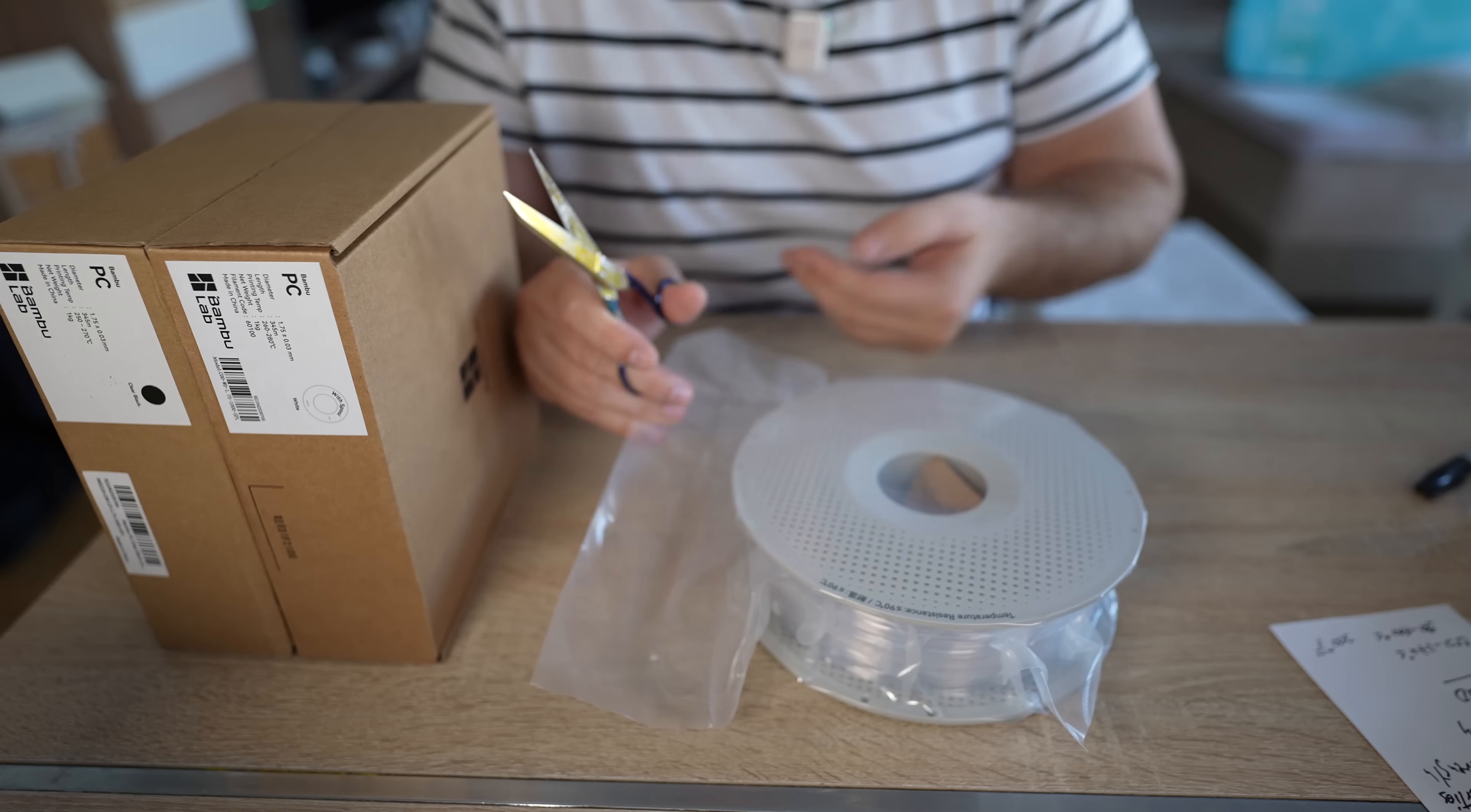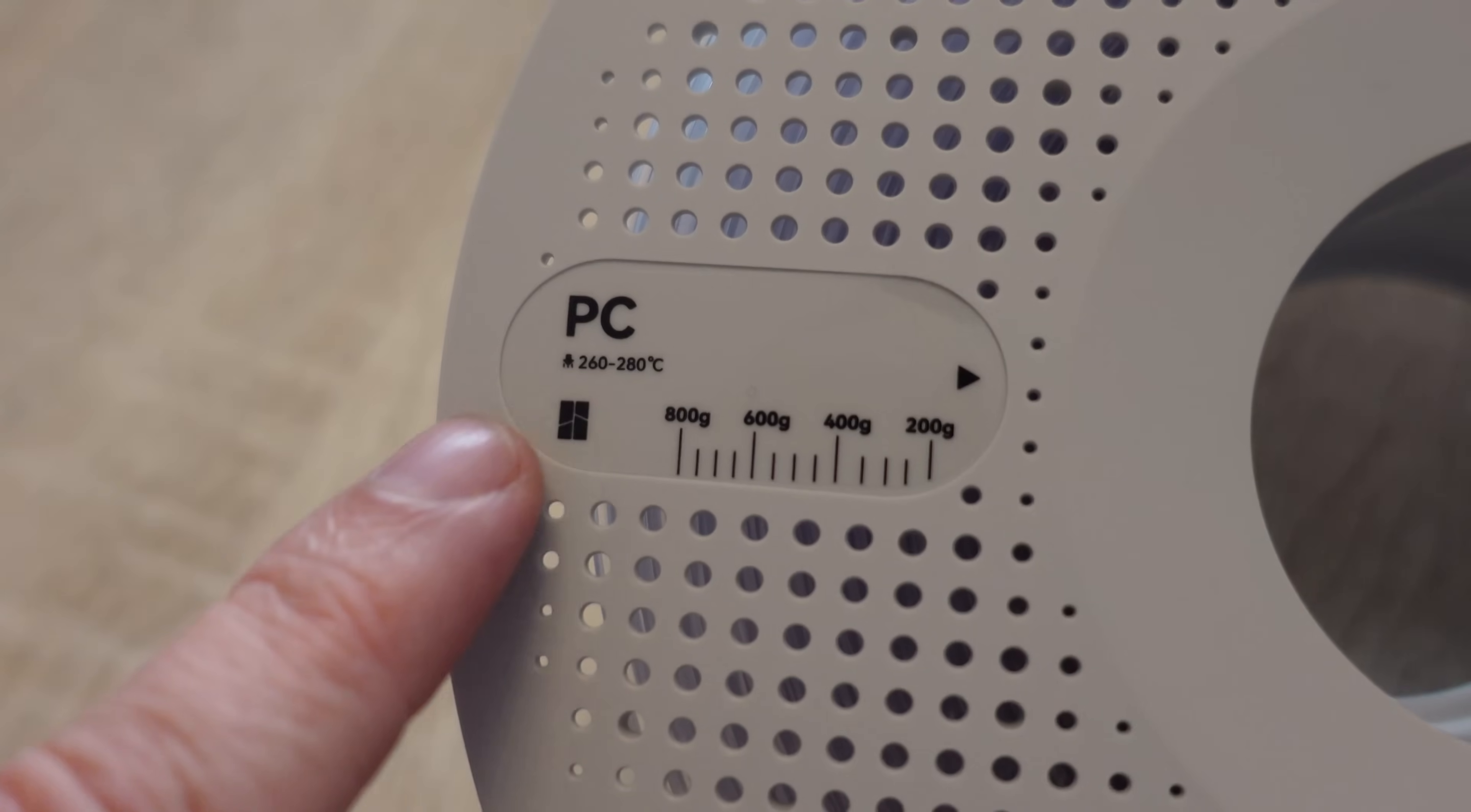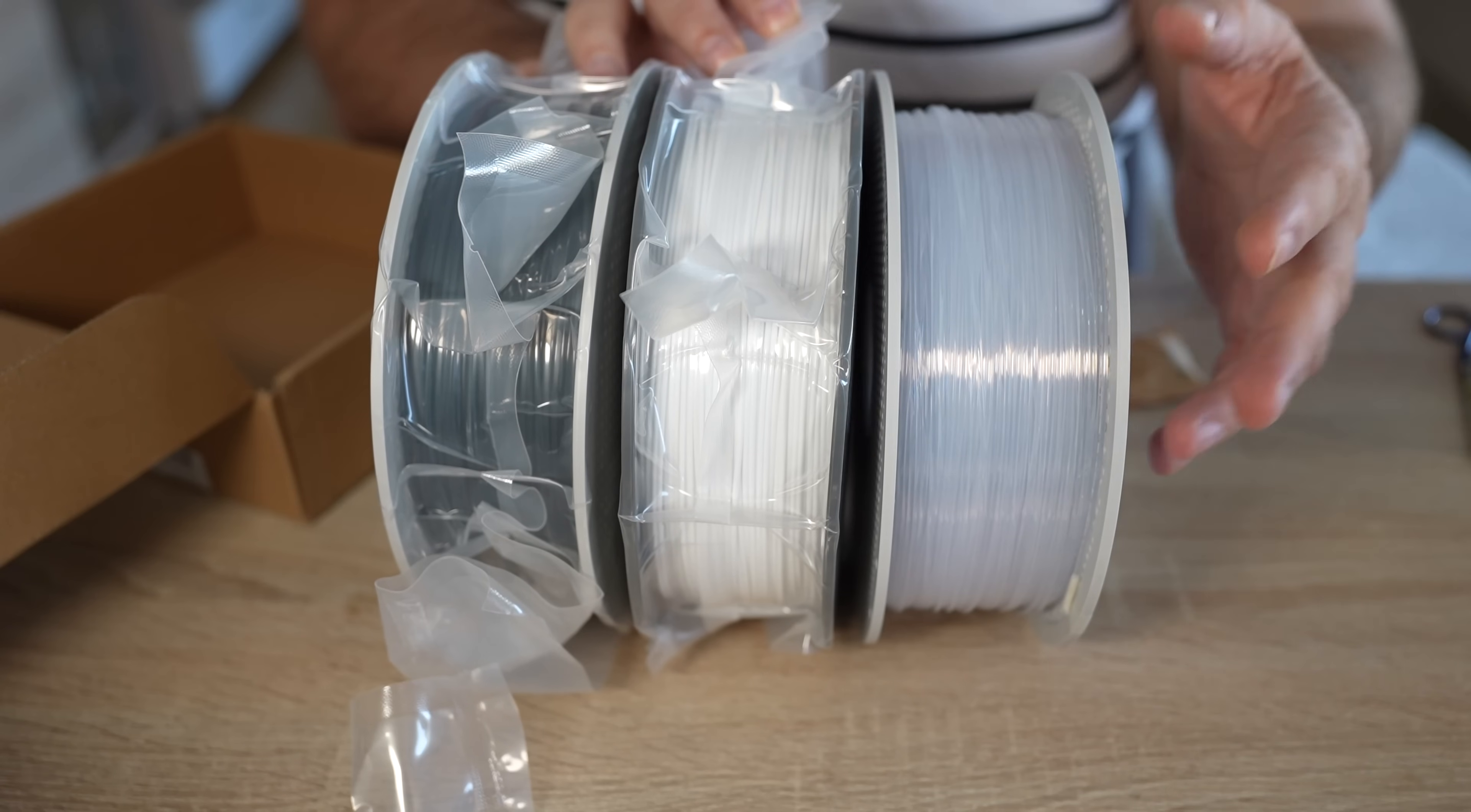Sometimes they use resealable bags while this one is not resealable. Even on the spool I can see the recommended print temperature between 260 and 280 degrees Celsius. I'm curious if this is the case with the other two. Yes, but the black will still have that lower print temperature between 250 and 270 degrees Celsius. But let me start to take them out from the bags before printing, because as I mentioned they will be printed out of the box without drying.